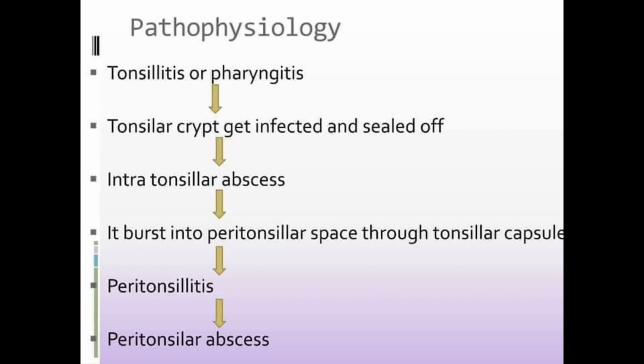The pathophysiology is as follows: acute tonsillitis or pharyngitis that is untreated or partially treated leads to tonsillar crypts becoming infected and sealed off, forming an intra-tonsillar abscess. This tonsillar abscess then bursts into the peritonsillar space, causing peritonsillitis, and finally peritonsillar abscess is formed.